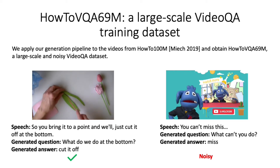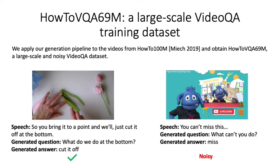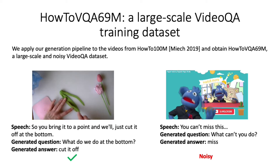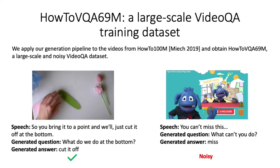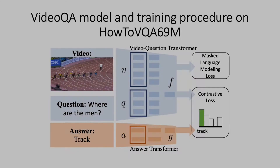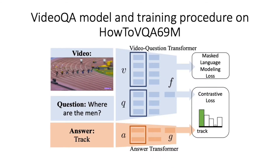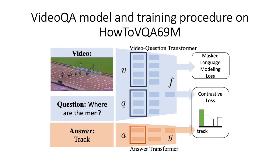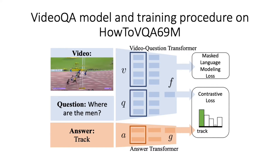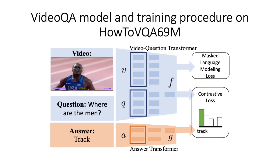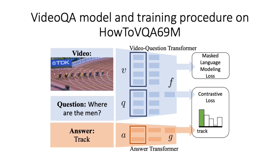Its annotations are inherently noisy, notably due to the weak correlation between speech and visual content in narrated videos. To deal with the large-scale vocabulary of answers in HowToVQA69M, we propose a training procedure based on a contrastive loss between a video question transformer and an answer transformer.